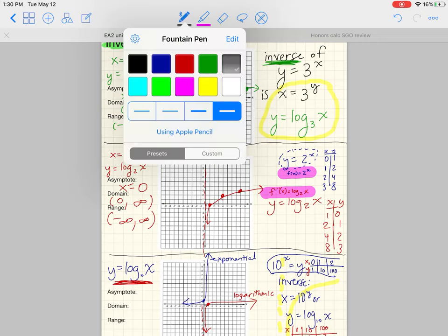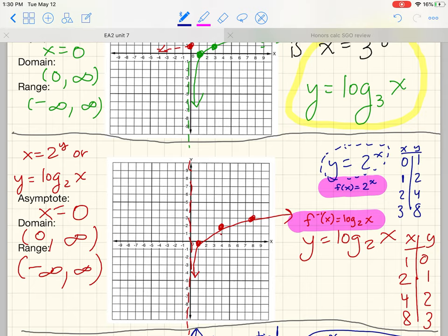If we wanted to graph 2 to the x, remember, every height off the asymptote is double the height before. Every height is double the height before. And it does make a nice curve because that was 2 to the x, the phenomenon of doubling.